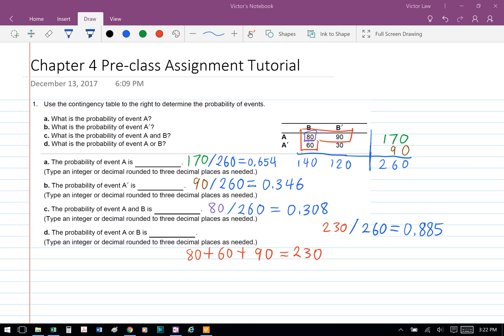Part C, the probability of event A and B is 80 divided by 260, which equals 0.308.